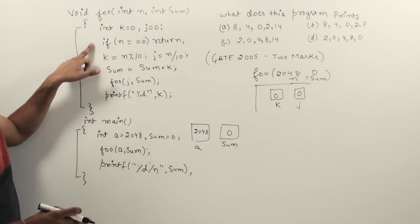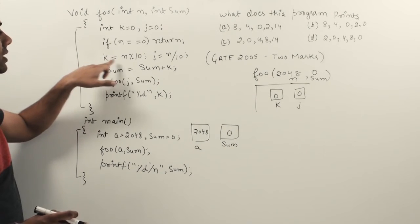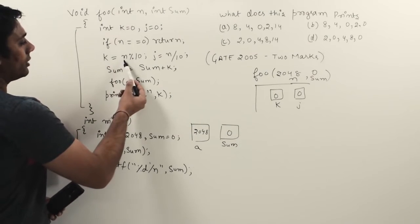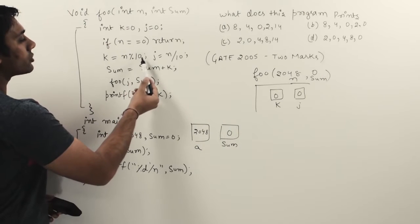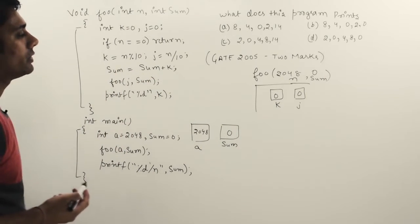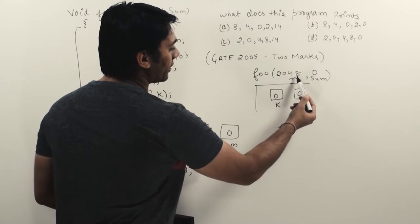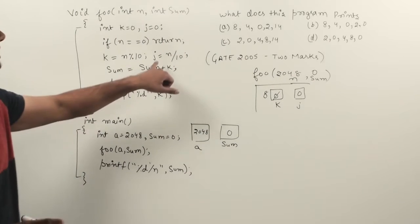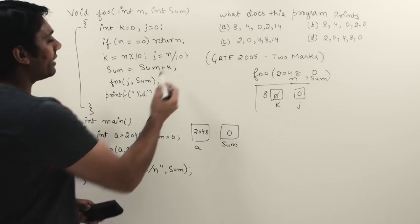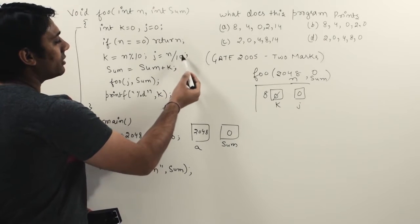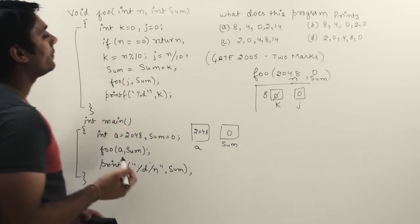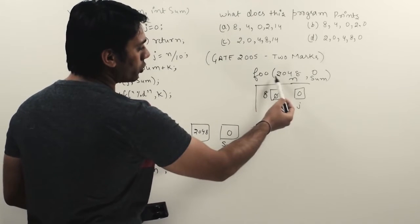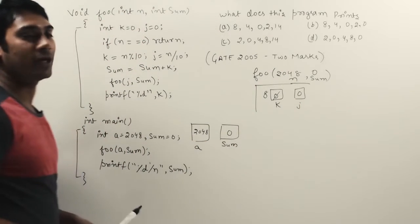Next, k is equal to n % 10 — that means we divide n by 10 and store the remainder into k. Since 2048 divided by 10 gives remainder 8, the value of k is now 8. Then j is equal to n / 10, which is integer division, so j stores 204 instead of 204.8.